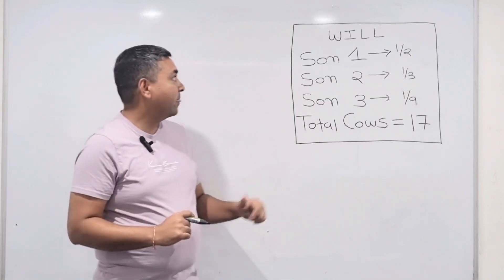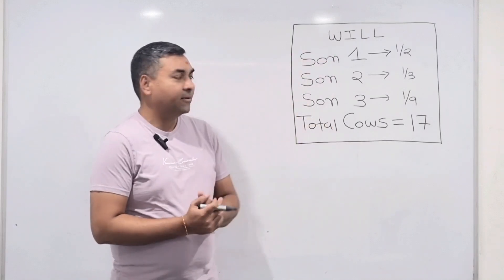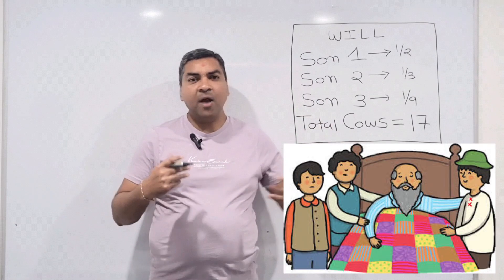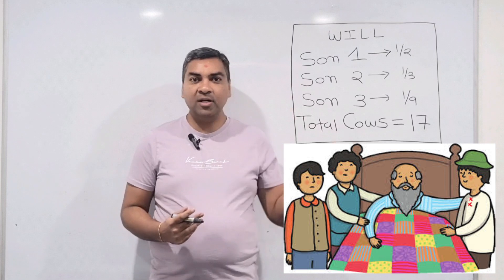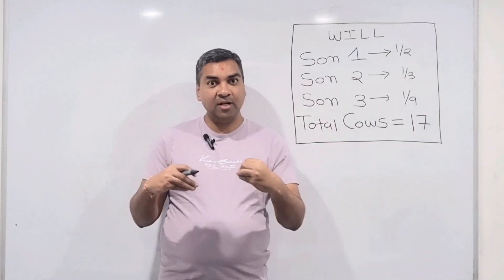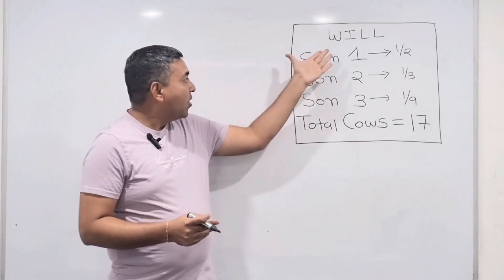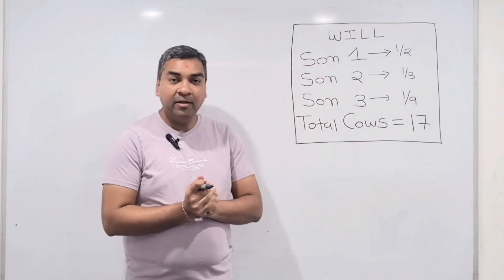The will was like this: he had three sons. Everyone can have some favorite son, some less favorite, some least favorite, and so does that person as well. So he has prepared this will to distribute these 17 cows among his three sons.